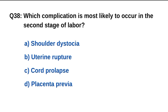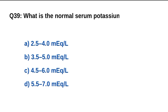Question number 38. Which complication is most likely to occur in the second stage of labor? The right option is A: Shoulder dystocia.